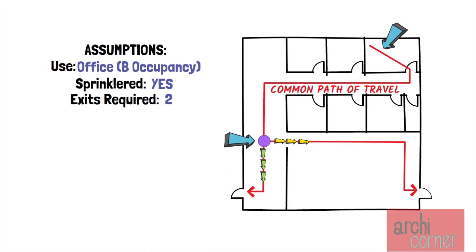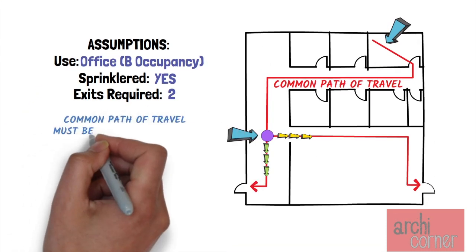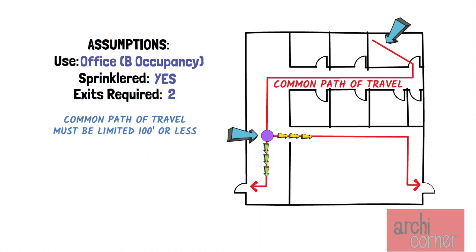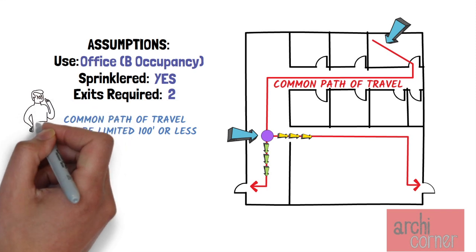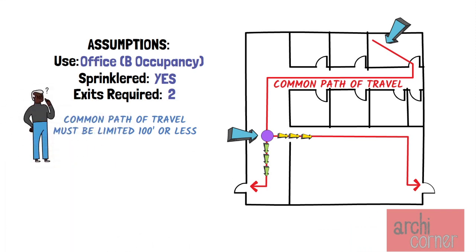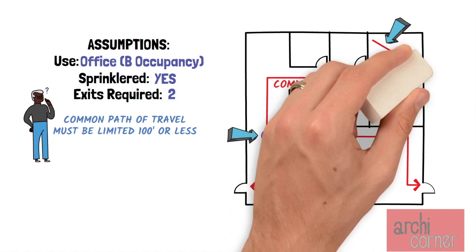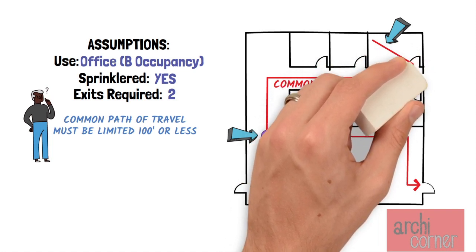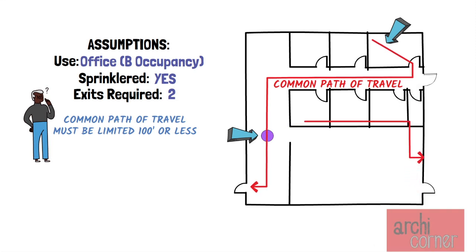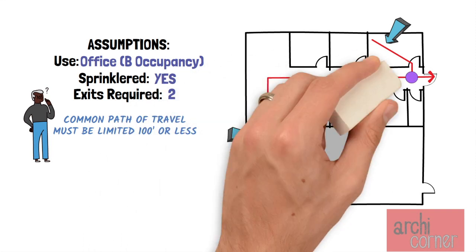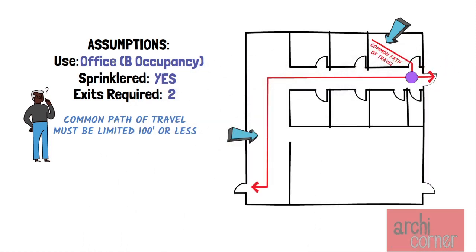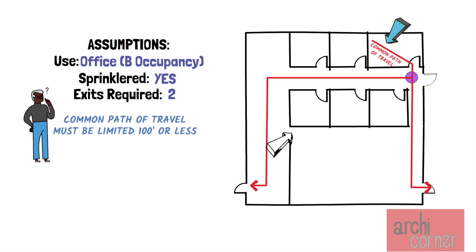Back to our example: the common path of travel must be limited to 100 feet or less. If we exceeded 100 feet for this common path of travel, we would have to modify the plan to reduce it. One way of doing this would be to add a door, which would significantly reduce the common path of travel. Another solution could be to create a hallway providing access to the original second exit. There may be multiple ways to provide a solution.